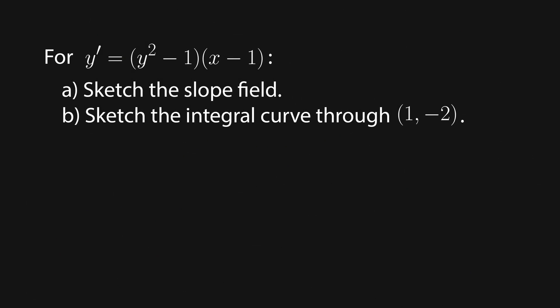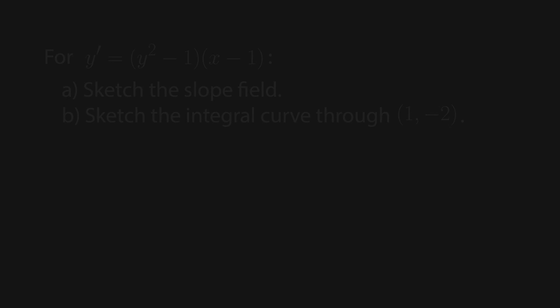For the sake of practice, I recommend you get a piece of grid paper and try graphing the slope field for y' equals y squared minus 1 times x minus 1. And while you're at it, draw the integral curve through 1, negative 2. You should get something that looks like this for the slope field, and something that looks like this for the integral curve.